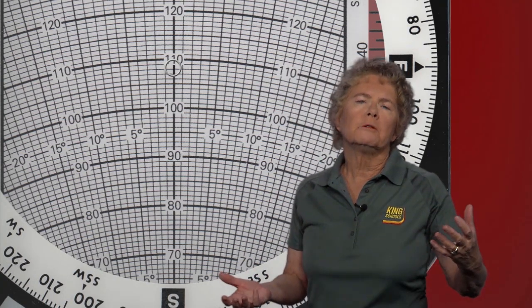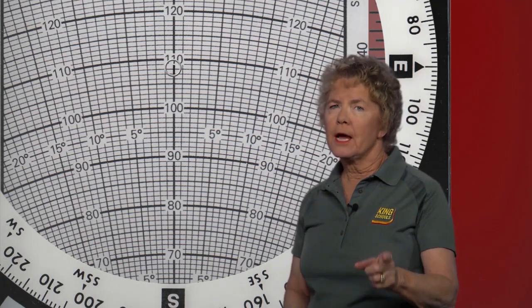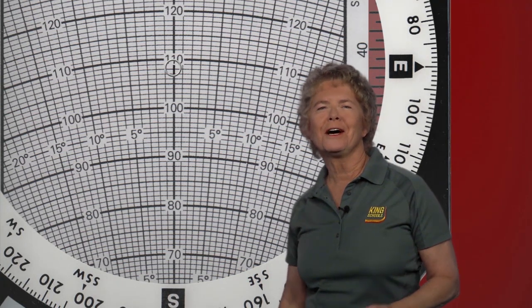On some flight computers, the other side of the slide has wind strength arcs that are labeled from about 250 up to about 600. If that's what you see, you've got the jet airplane side in, and you need to take the slide out, turn it around, and put it back in again.